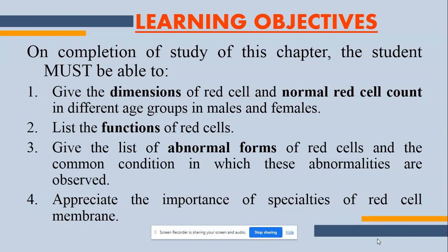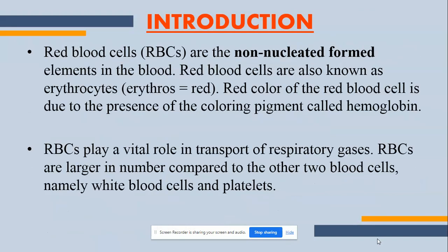You should also list the abnormal forms of red blood cells commonly observed, and appreciate the importance of specialties of the red blood cell membrane. Red blood cells are the non-nucleated formed elements of the blood. They have no nucleus and are a cellular component of blood along with WBCs and platelets. Red blood cells are also known as erythrocytes, where 'erythro' means red and 'cytes' means cell. This red color is due to the presence of a coloring pigment called hemoglobin. RBCs play a vital role in the transport of respiratory gases and are larger in number compared to the other two blood cells.